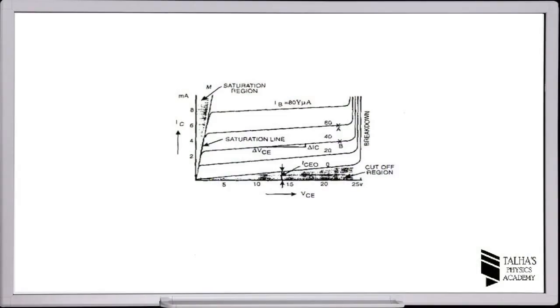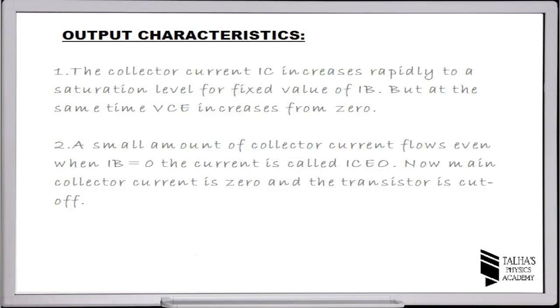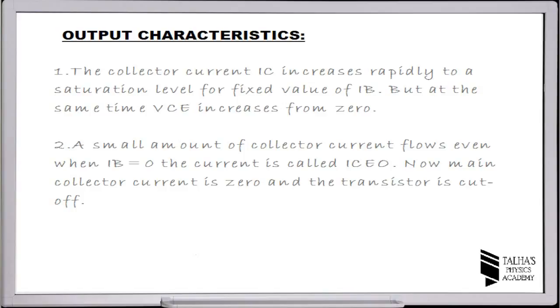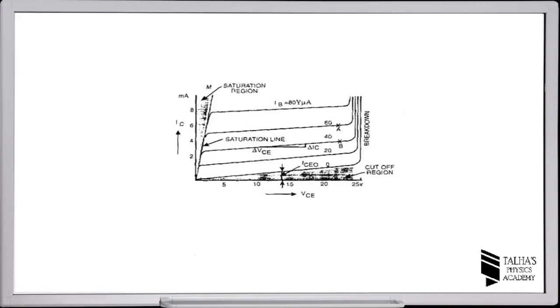From the family of curves, we can study these points. Number one: the collector current IC increases rapidly to a saturation level for a fixed value of base current IB, while the collector-emitter voltage increases from zero, as is clear from the figure. Point number two: a small amount of collector current flows even when IB is equal to zero. This current is called ICEO. When the base current is zero, the transistor is cut off.